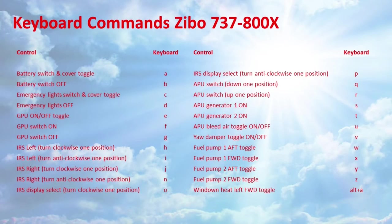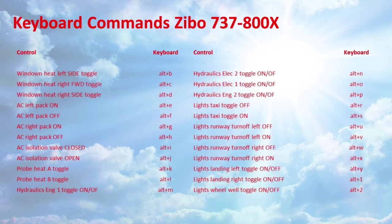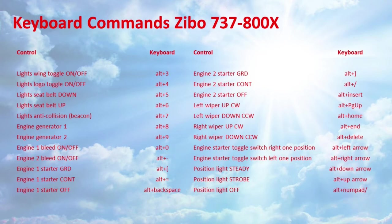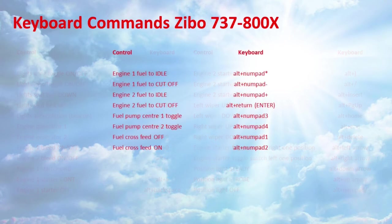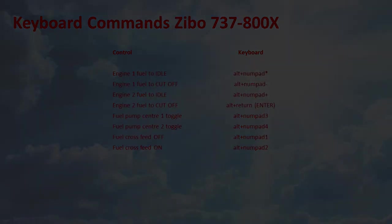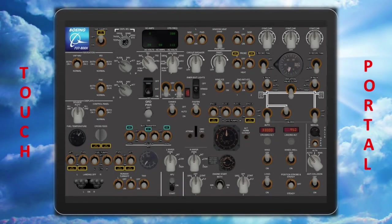All I need to do is find the relevant data refs in X-Plane 11 for the switches concerned and I should be good to go. I'm sure some of you will be wondering how all of this works, so I'll try to explain the key bindings I've used and some of the programming logic behind the custom buttons in Touch Portal. As far as the keyboard bindings are concerned, I've programmed around 80 of them in total, all under one new and unique keyboard profile in X-Plane 11 which is being used solely for this Touch Portal Zibo 737 project.